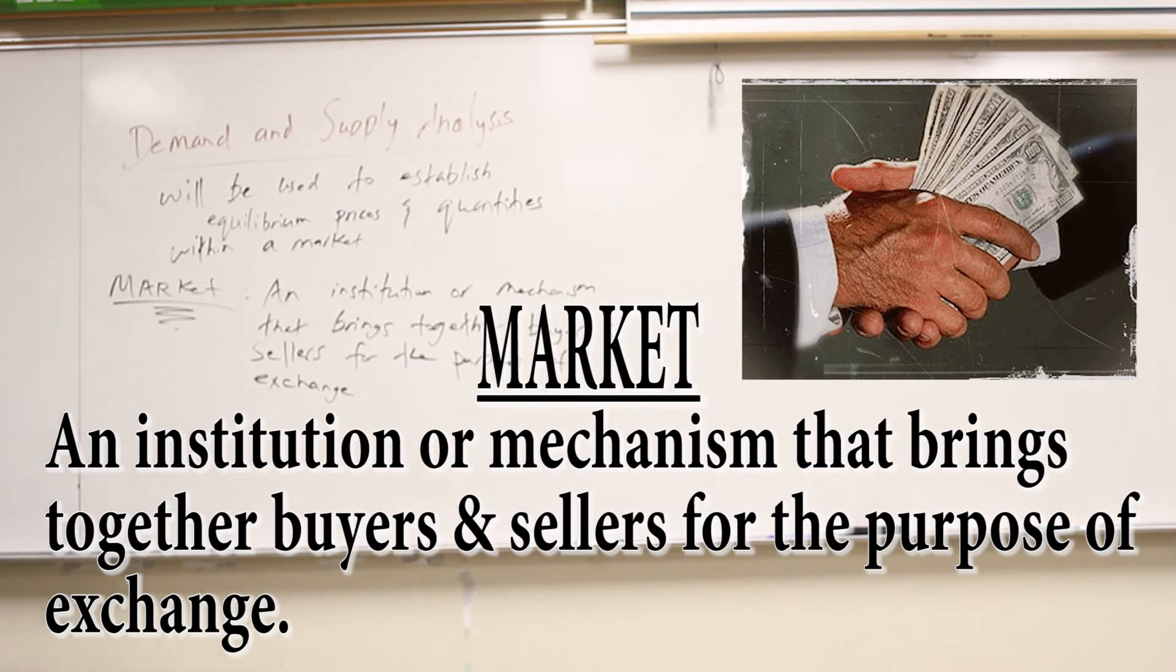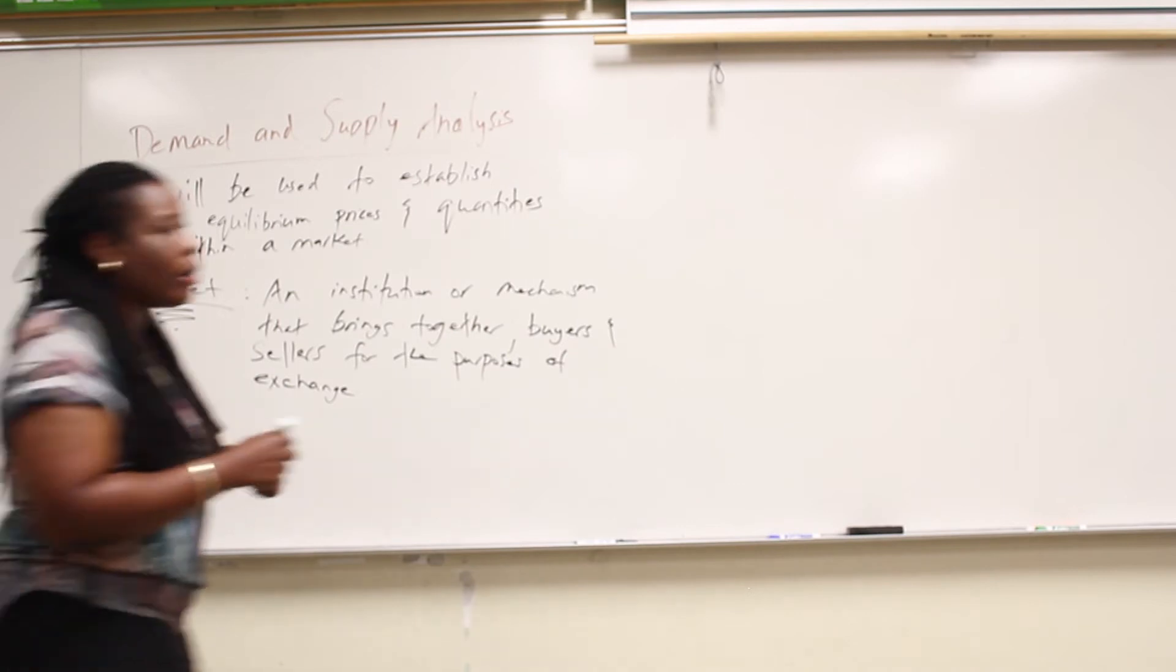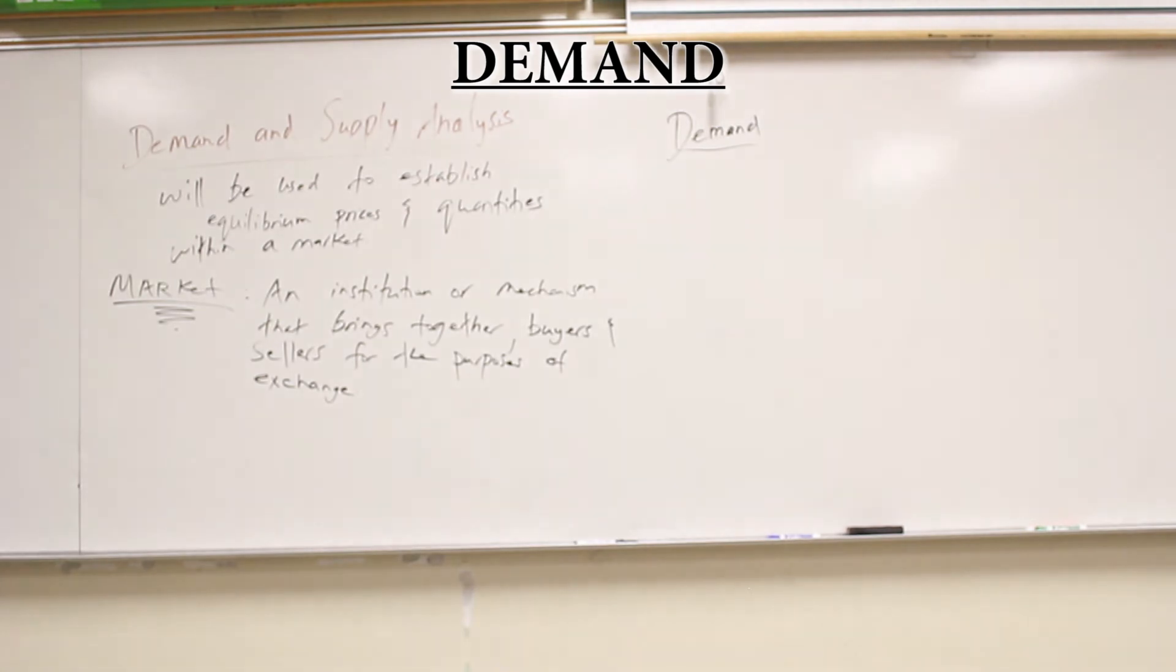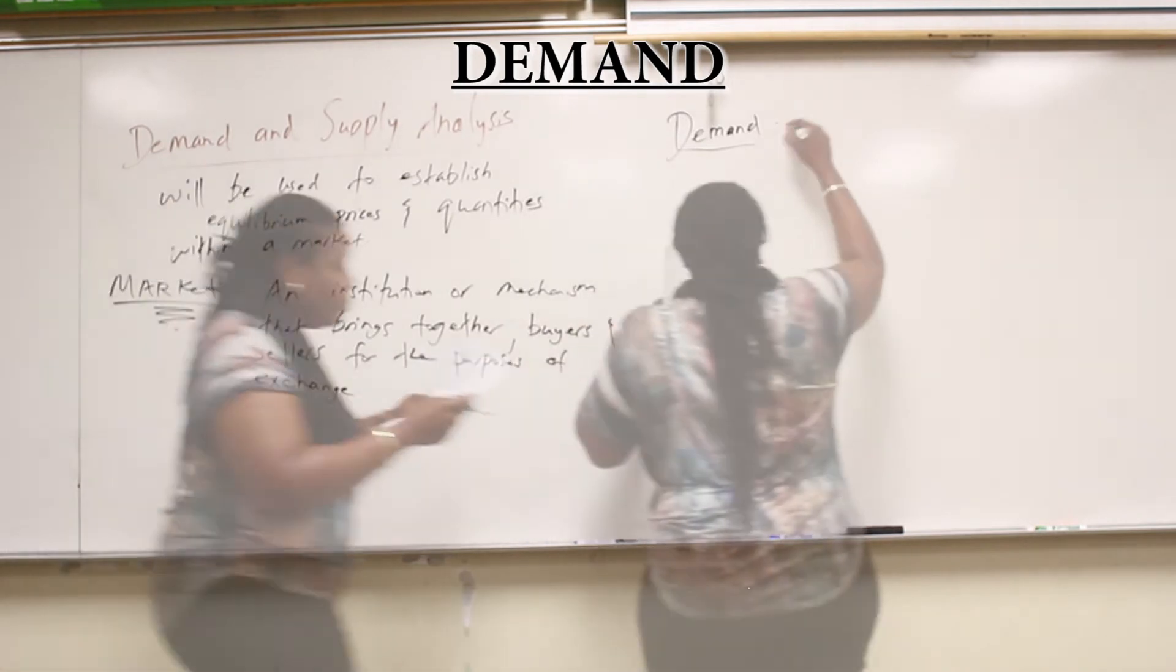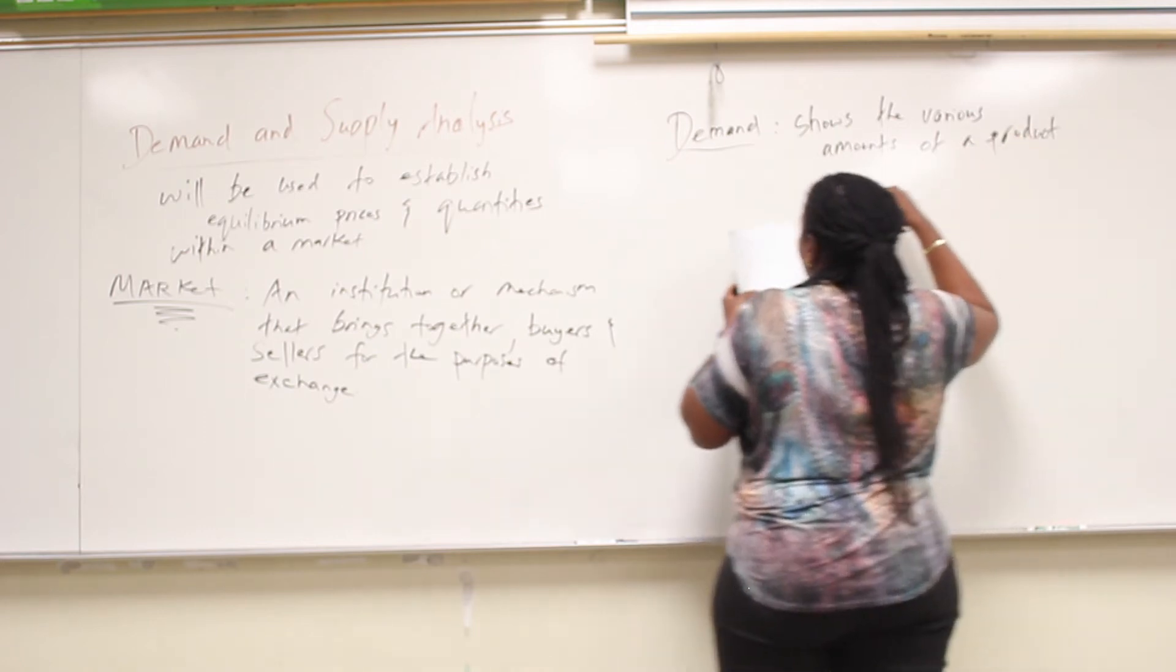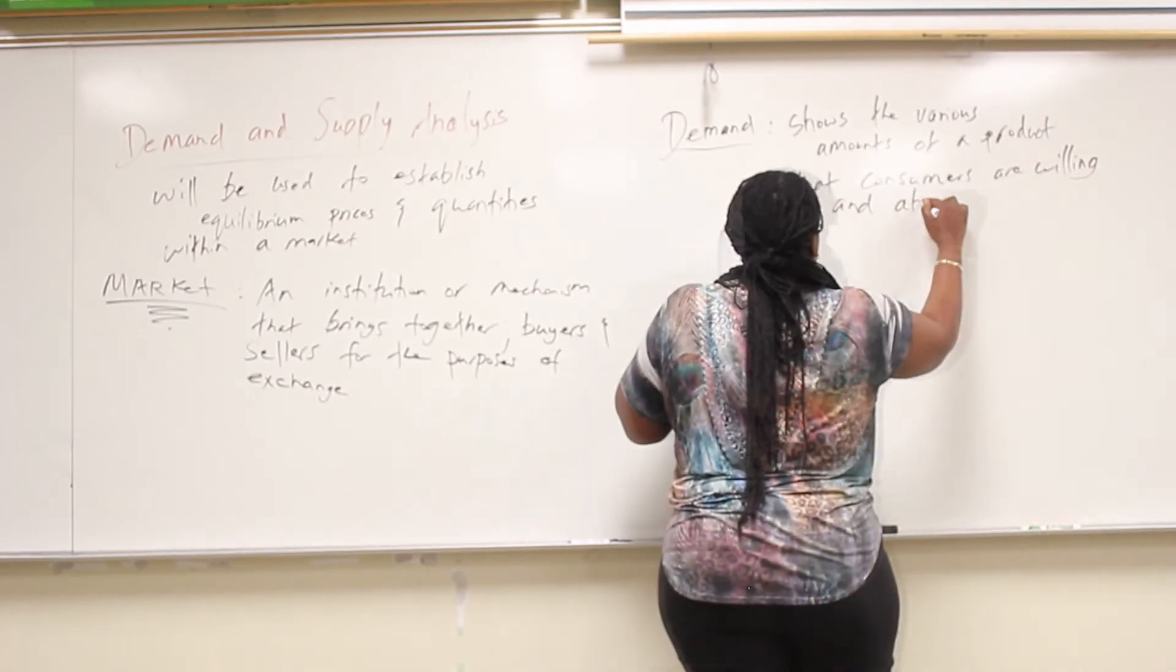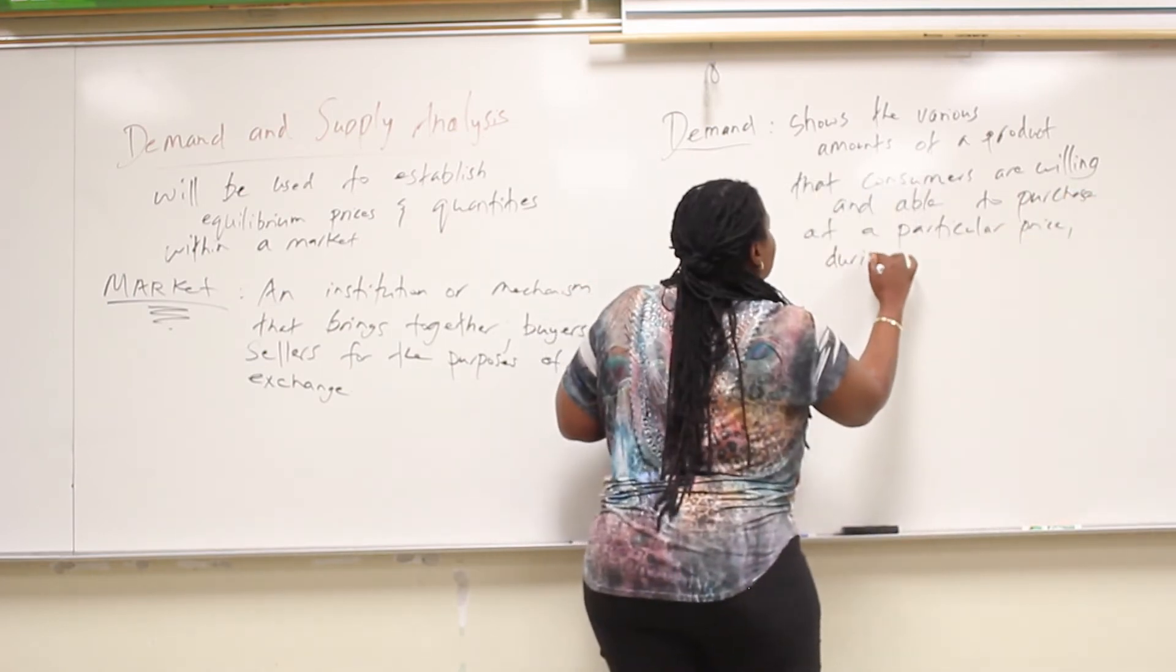Now very broadly and generally, markets are made up of buyers and sellers. We're going to look at the story that affects both of these players, one by one. And we're going to start off with the buyer. We're going to start off with demand. We're very familiar with that because we're all demanders. So we'll start with that one. This is from the perspective of the person buying the good. Now formally, demand shows the various amounts of the product that consumers are willing and able to purchase at a particular price during a particular time.